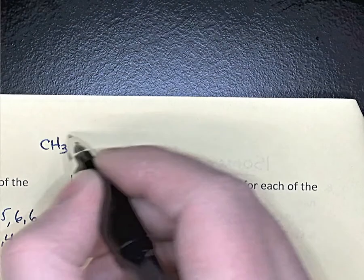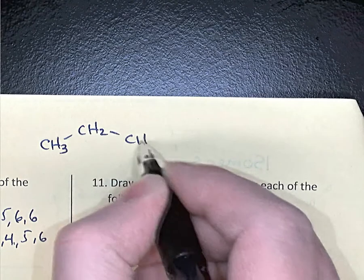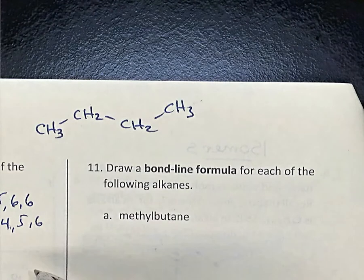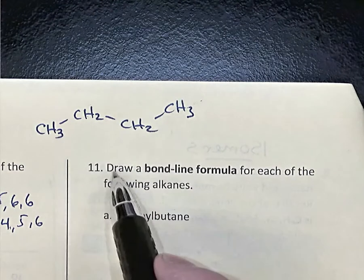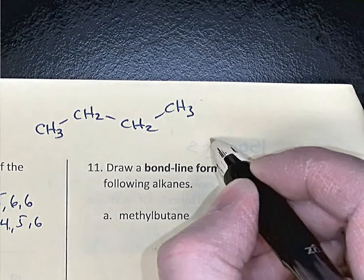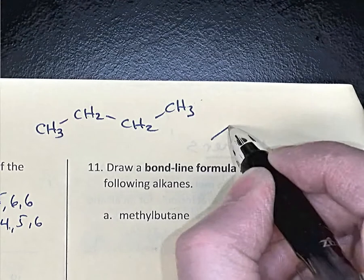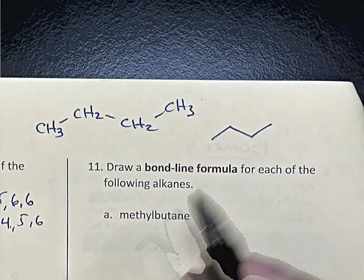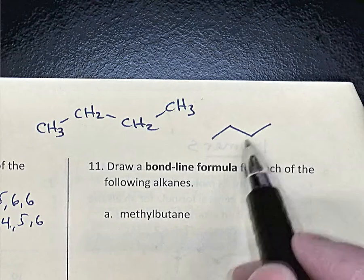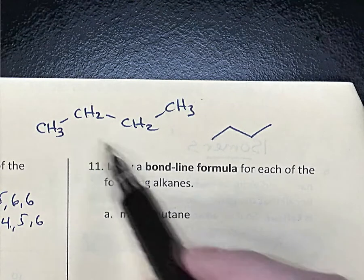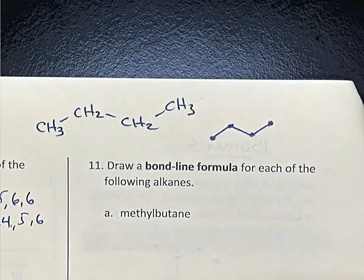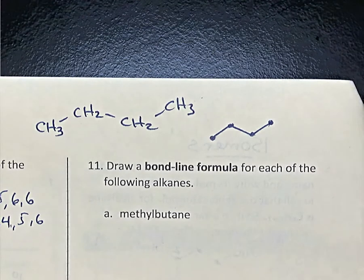So if we have a molecule CH3-CH2-CH2-CH3, that's 1, 2, 3, 4 carbons — this is called the condensed molecular structure. We can represent it in a much simpler way: 1, 2, 3, 4, and that's called the bond line formula, because the bonds are simply represented as lines, and the carbons are assumed to be at these vertices — those are your four carbons.